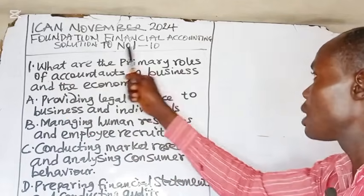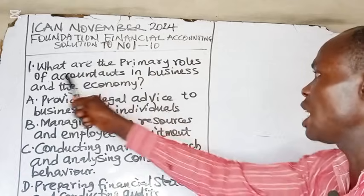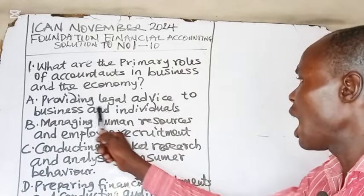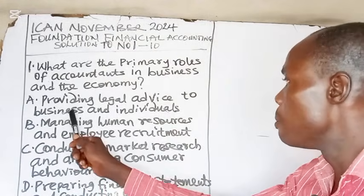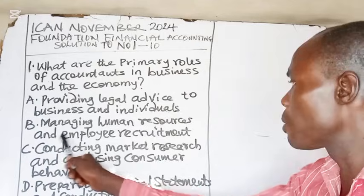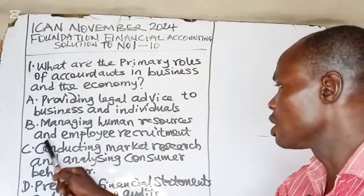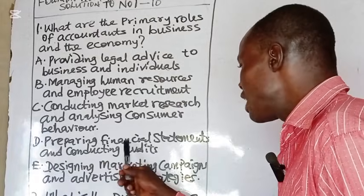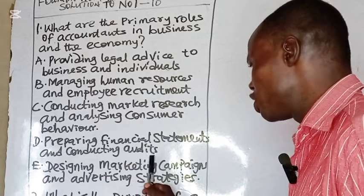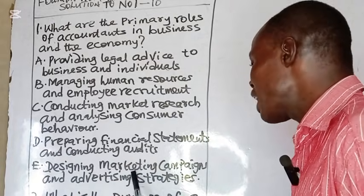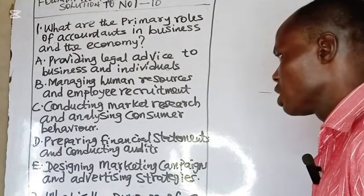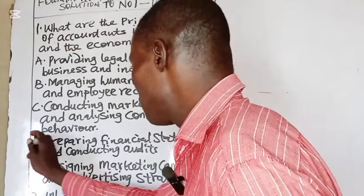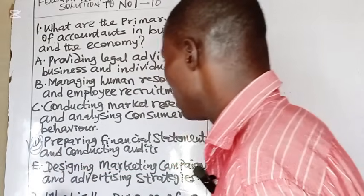Number 1: What are the primary roles of accountants in business and the economy? Option A: providing legal advice to businesses and individuals. B: managing human resources and employee recruitment. C: conducting market research and analyzing consumer behavior. D: preparing financial statements and conducting audits. E: designing marketing campaigns and advertising strategies. The primary role of an accountant is preparation of financial statements and conducting audits. The answer is D.